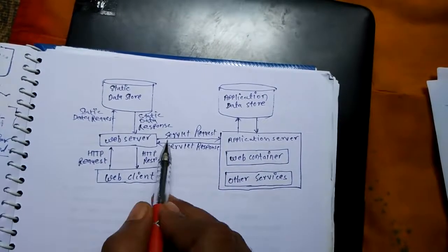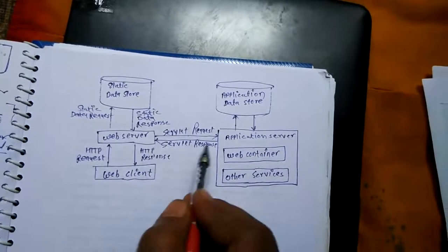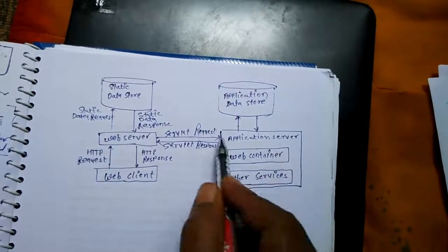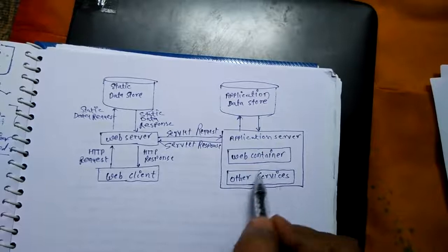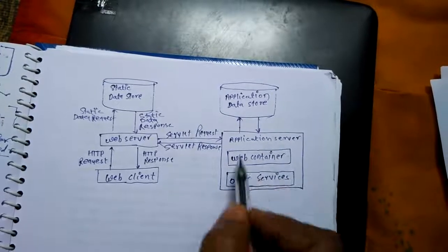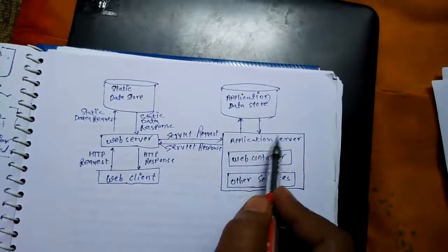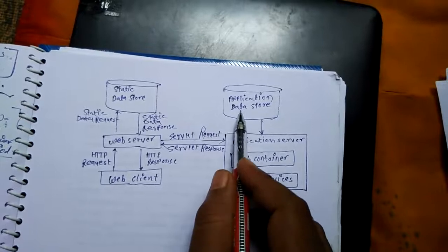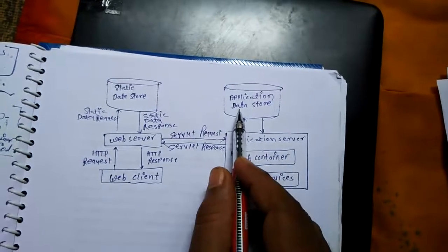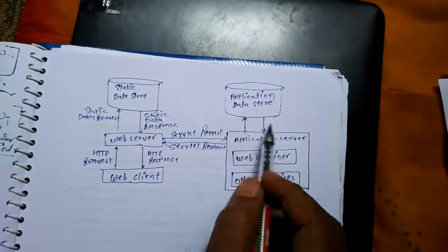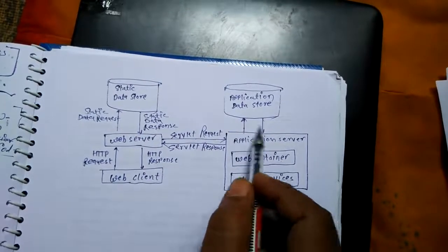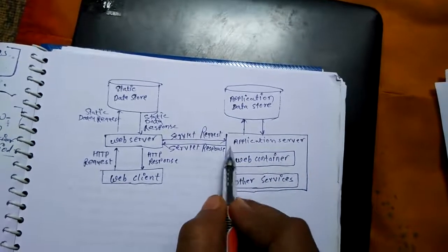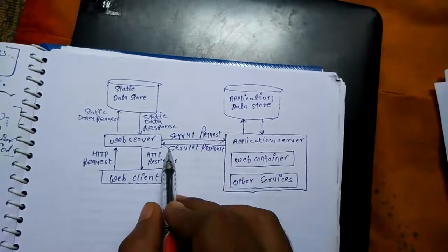अब web server के पास और किस तरह से हो सकता है — web server जो है, servlet request करेगा। यहां पर servlet request करने के बाद, यह जो application server होता है, जहां पर web container, other services जो available रहते हैं, यहां पर search करेगा। Search करने के बाद वो जो application data — application का server है यह — उसका data कहीं न कहीं store रहेगा। वो वहां पर search करेगा application data store पर, वहां पर search करने के बाद वो application server को reply करेगा, और जो भी web container, other services हैं, इनके माध्यम से फिर web server को response करेगा।